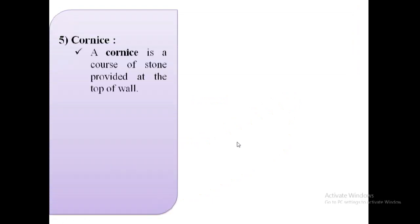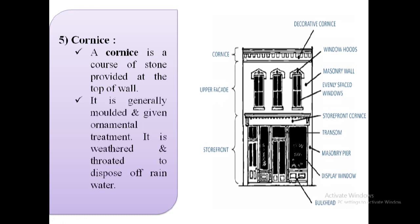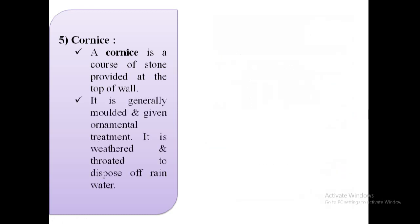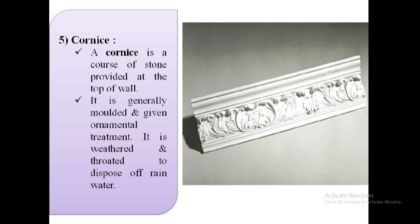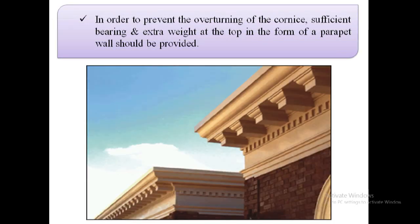The next term is cornice. A cornice is a course of stone provided at the top of a wall. As shown in the image, at the top of this wall, a cornice is provided. It is generally molded and given ornamental treatment. It is weathered and throated to dispose of rainwater. To prevent the overturning of the cornice, sufficient bearing and extra weight at the top in the form of a parapet wall should be provided.